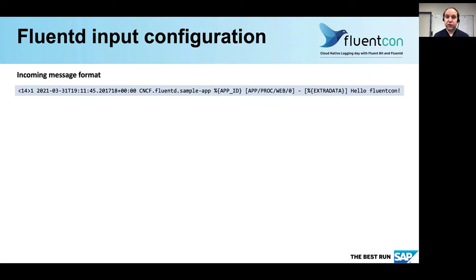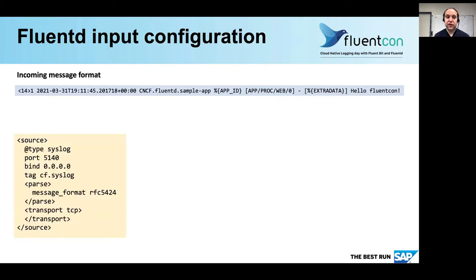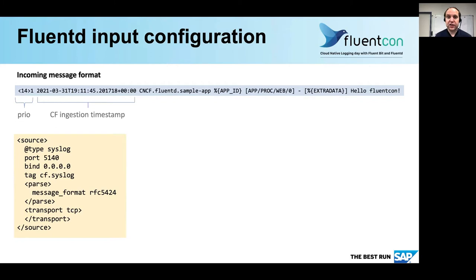What do we see at the Fluentd side? Incoming messages will have the following format and you will get them by configuring a source type syslog. The message format is RFC 5424 and the transport will usually be TCP — depending on the Cloud Foundry configuration it can also be UDP. The first part is the priority, which is defaulted to info by Cloud Foundry, and the next thing is the ingestion timestamp — that is the timestamp when the Cloud Foundry Loggregator received the message.